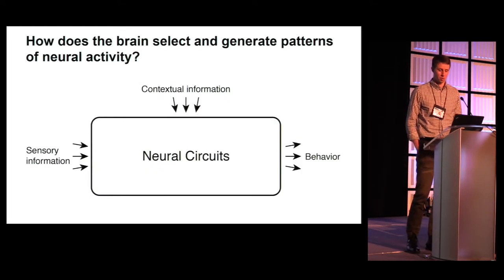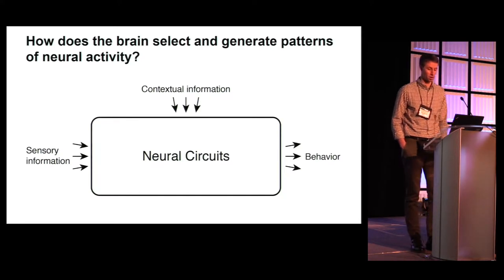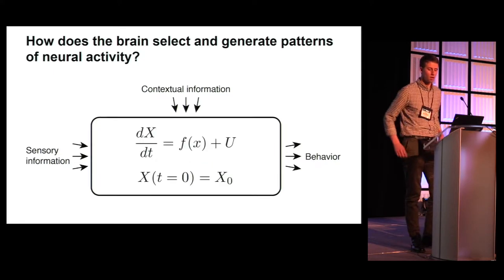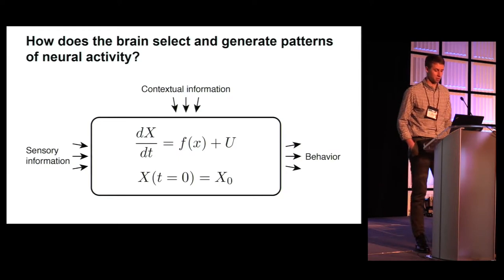In order to produce a variety of behaviors, neural circuits in the brain must be able to generate patterns of neural activity dependent on both sensory and contextual information. We set out to see whether we could understand the generation of sensory motor behavior using the language of dynamical systems.